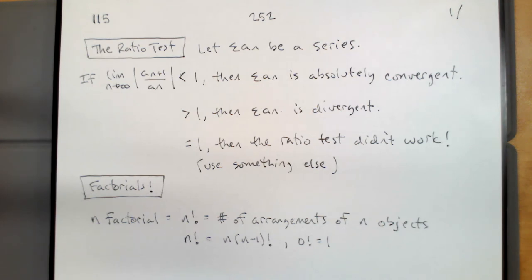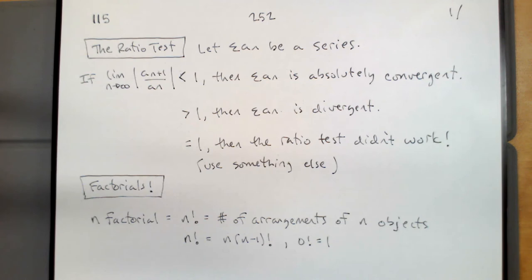We defined n factorial — which we denote as n followed by an exclamation point — as the number of arrangements of n objects. Yesterday we saw that zero factorial must equal one, because if you have zero objects, there is only one way to arrange them.